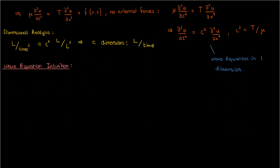So let's go back to our string. We showed earlier that the tension is constant throughout the string, provided that we have small vibrations. So if I zoom in on some element of the string, the same tension is going to be pulling on it from both sides. Now this string that I drew is curved downwards, and what this means is that it has a negative concavity, or that the second partial of u with respect to x is negative.